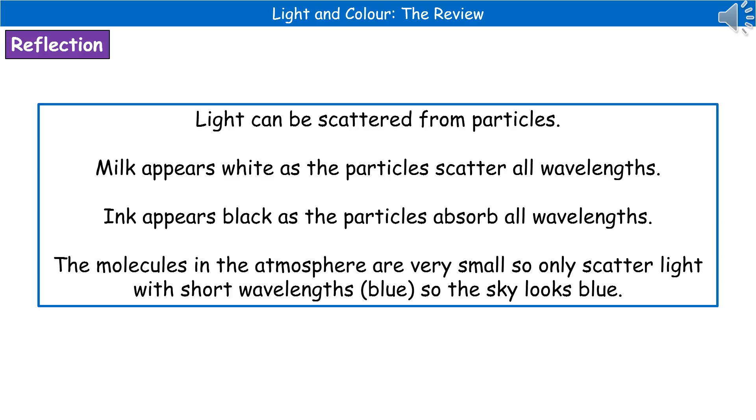It's worth bearing in mind, it's not only flat surfaces like paper and mirrors that are going to scatter light. We can also have light scattered by particles. The reason that when you've got a glass of milk, it looks like it's white is because the particles are scattering all of the wavelengths that are hitting them. The reason that some ink will appear black is because the particles are absorbing all of those wavelengths of light.